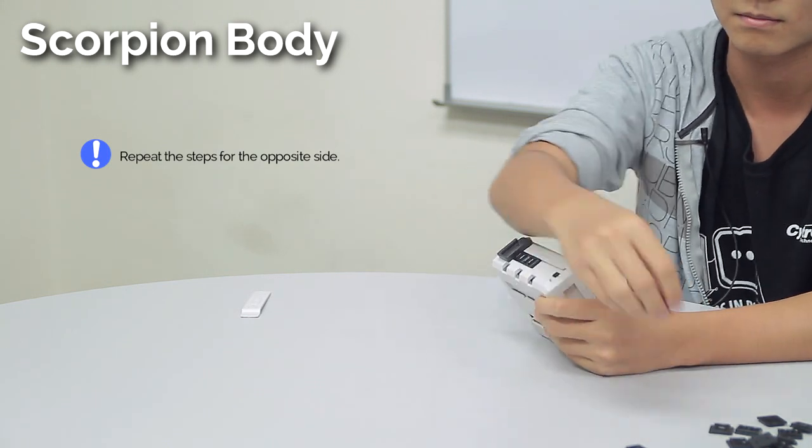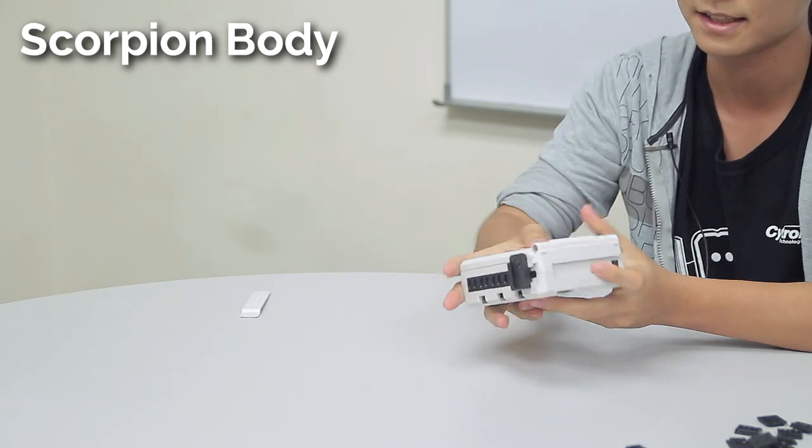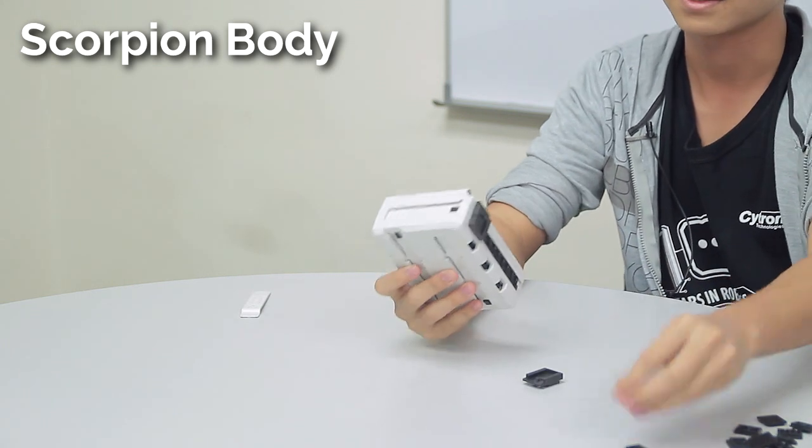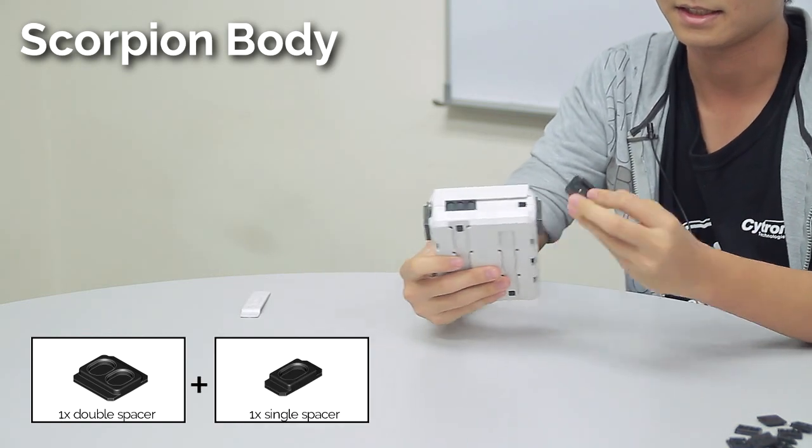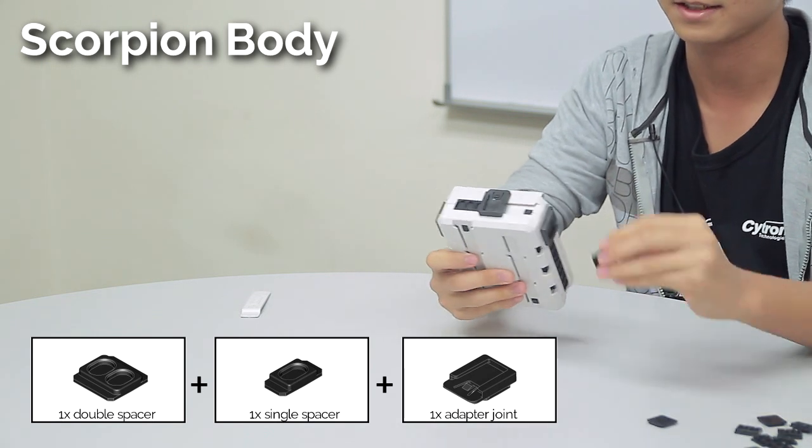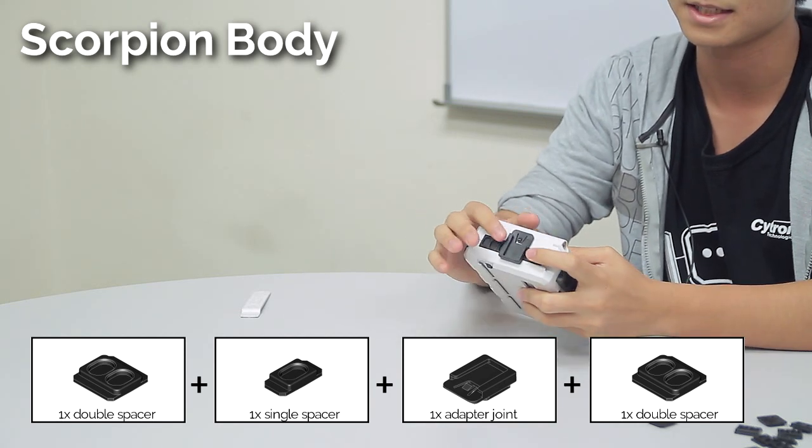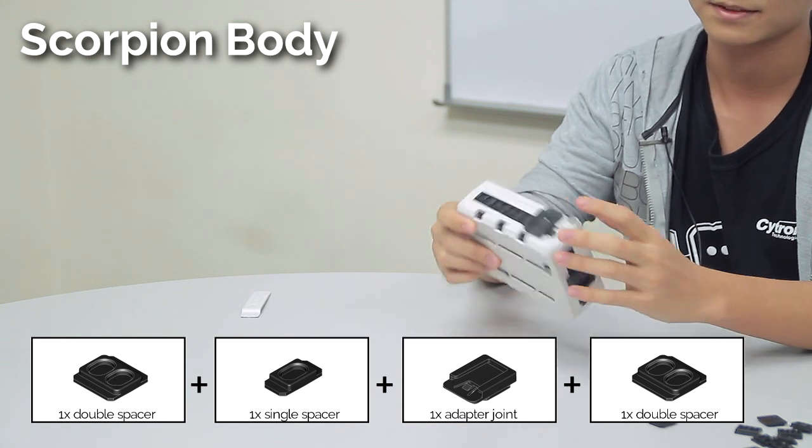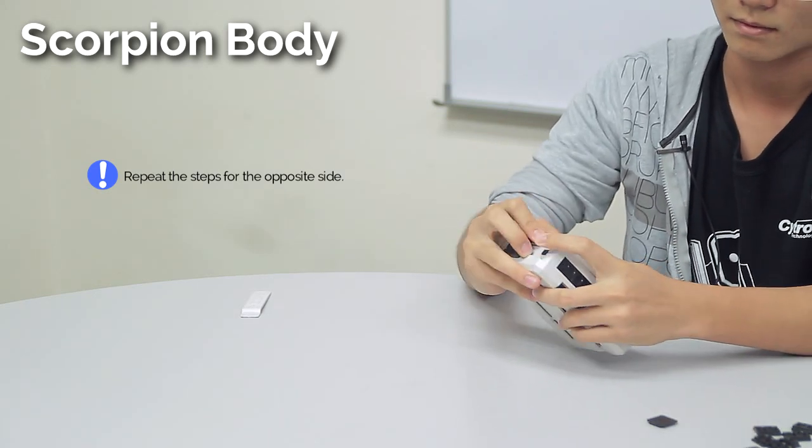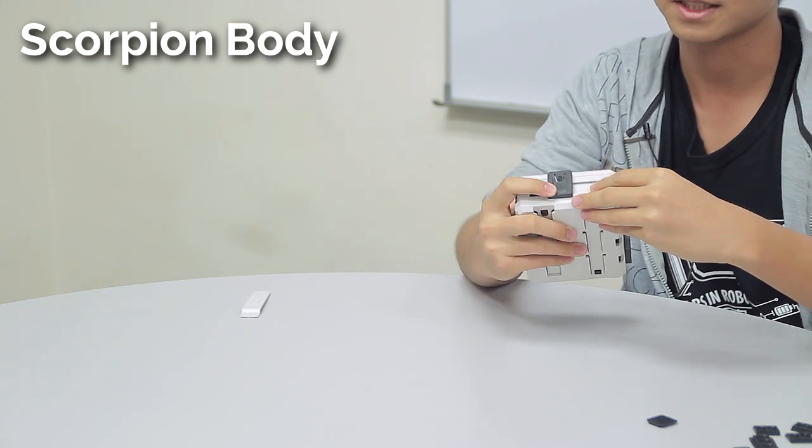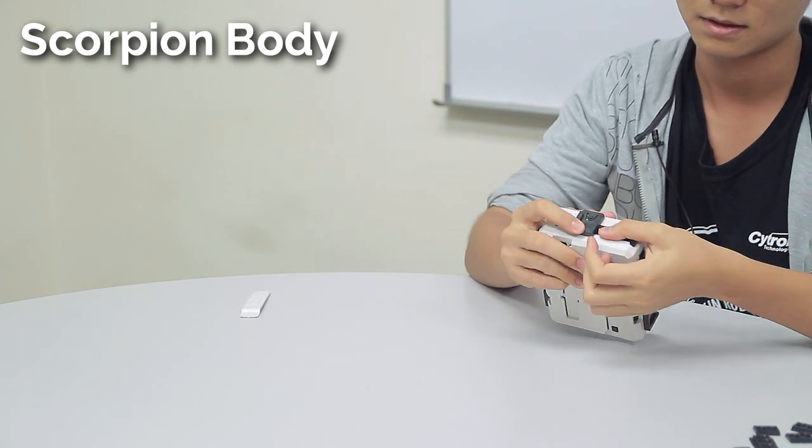Now for the front and the end, we want adapter joints at the middle. So slot in a double spacer first, then a single spacer, and then the adapter joint. In case you haven't noticed yet, you can't have an adapter joint directly at the middle if you use this side, but it's okay if it's centered to one side a bit, it doesn't matter. Repeat it for the other end: two double spacers, one single spacer, and one adapter joint.